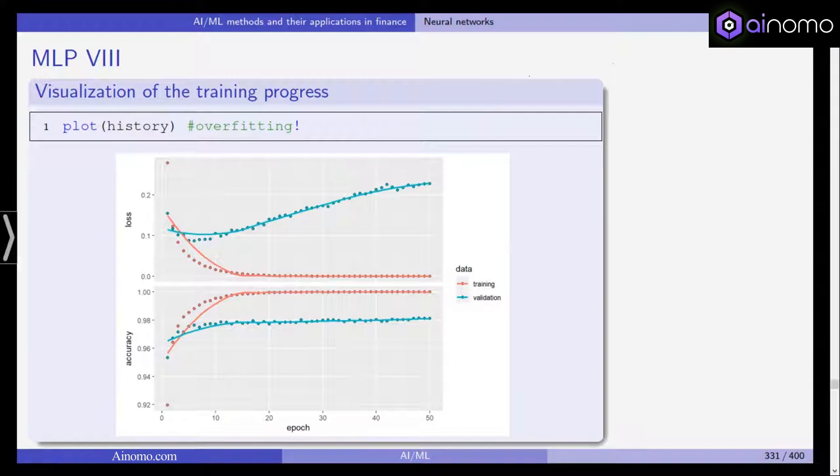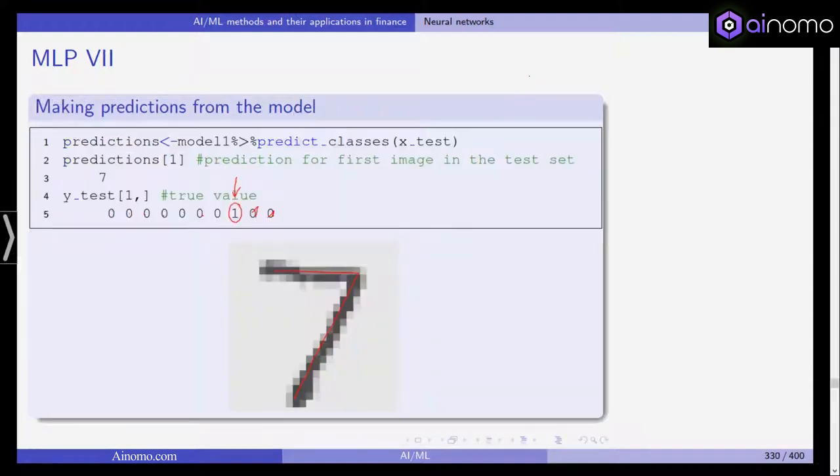We trained a multi-layer perceptron in order to recognize handwritten digits. In this example, we were able to predict from this picture correctly that this was supposed to be a 7, and it actually was a 7.